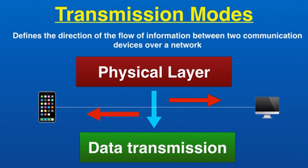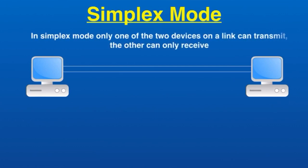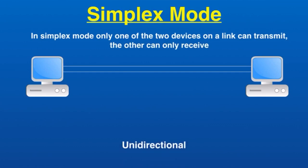There are three types of transmission modes. In simplex mode, only one of the two devices on a link can transmit data — the other can only receive. Simplex mode can use the entire bandwidth of the channel to send data in one direction. A sender can only send data but cannot receive it, and a receiver can only receive data but cannot send it. Communication is unidirectional — we send a command or signal and do not expect any response back.